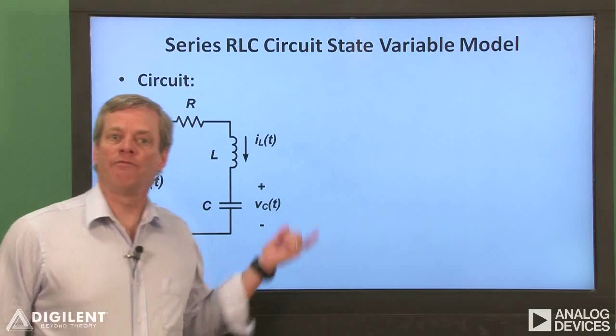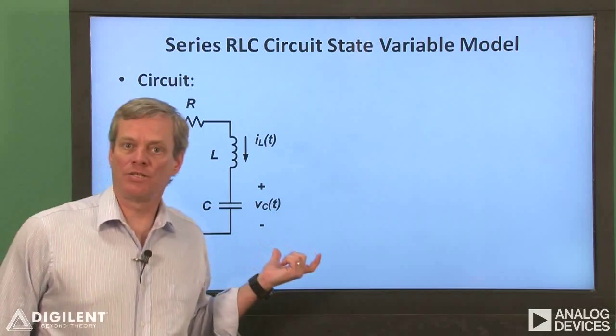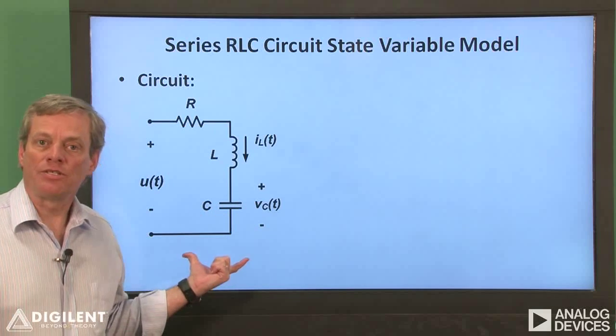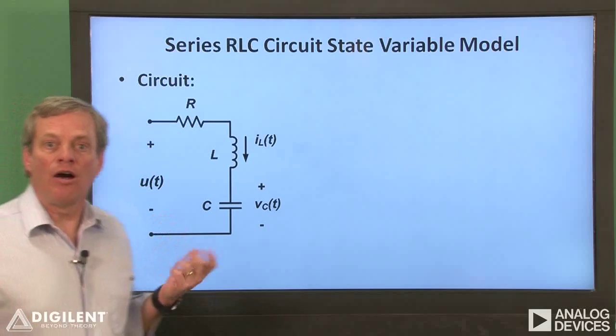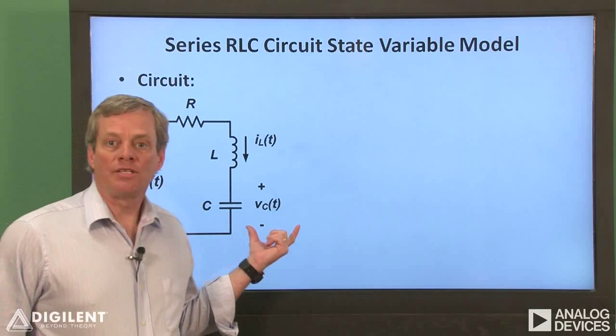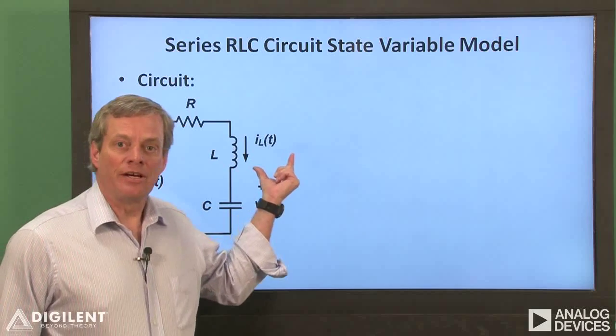First, I'll briefly present the state variable model for a series RLC circuit. This is our circuit of interest. Our input is a voltage at these terminals, and our outputs are the two system states, the voltage across the capacitor and the current through the inductor.